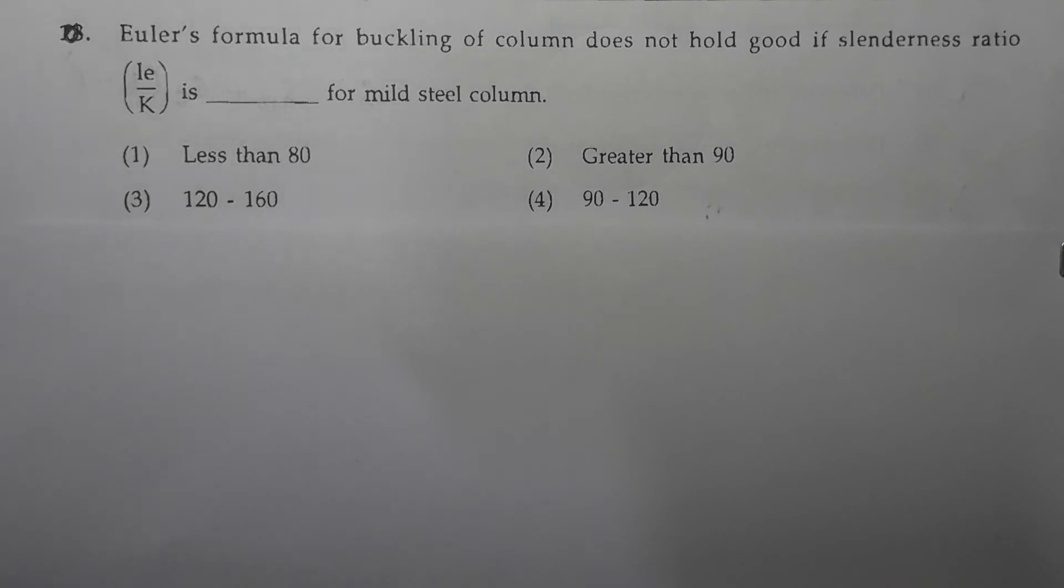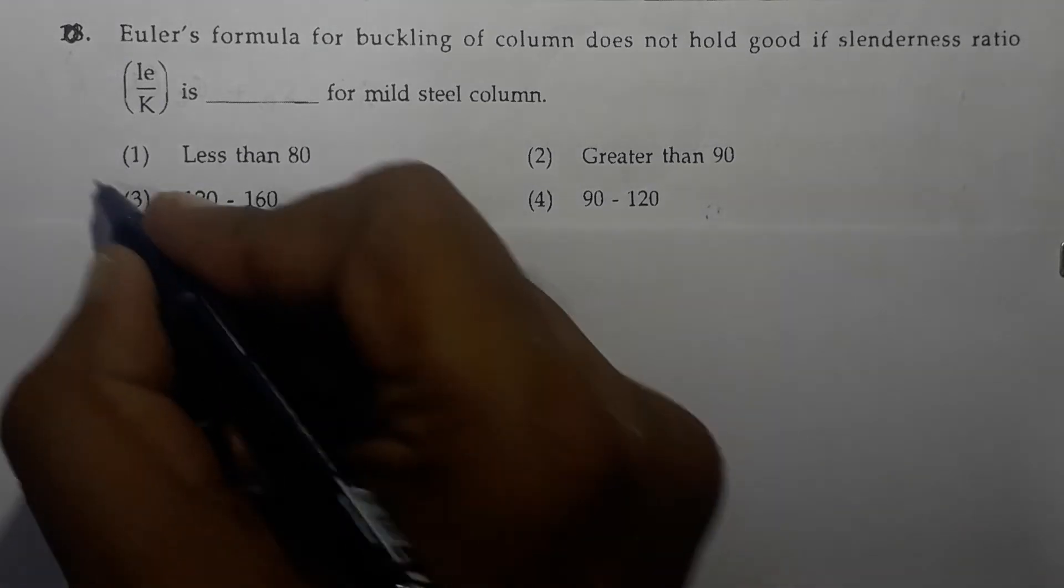Euler's formula for buckling of column does not hold good if slenderness ratio is. Now we know that slenderness ratio is the ratio of effective length to the least radius of gyration, L e by k. Euler's formula is applicable only to long columns and it is not applicable to short columns. A column is called a short column if L e by k is less than 80 and that is why Euler's formula is not applicable to the short column, means when the slenderness ratio is less than 80. So option 1 is the correct option.